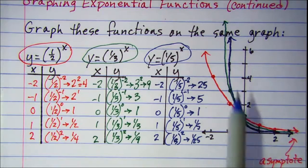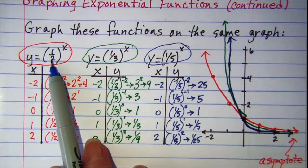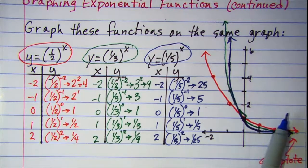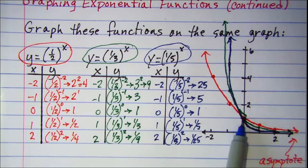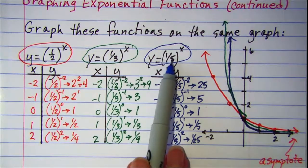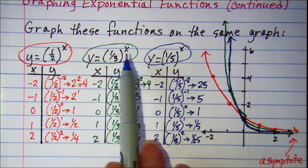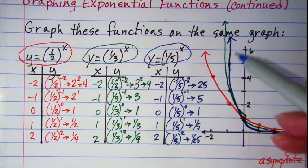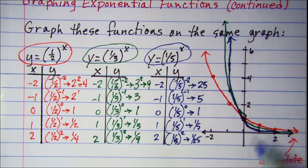So all of these graphs, when we have a fractional base, are decreasing curves. They all cross the y-axis at y equals 1. As the base gets smaller — notice one fifth is smaller than one half — the left side gets closer to the y-axis and the right side gets closer to the x-axis.